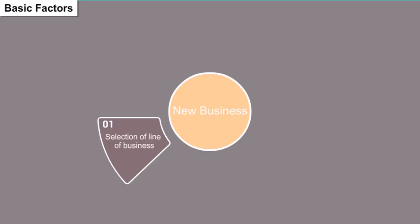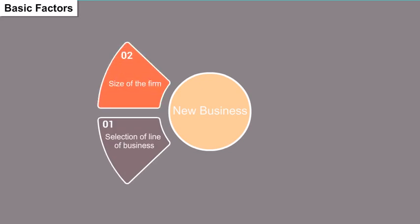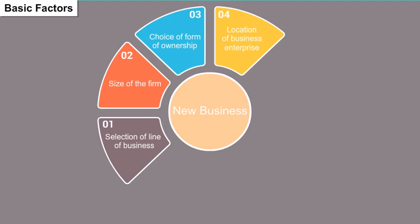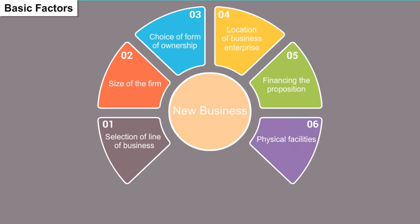The basic factors for starting a business include: selection of line of business, size of the firm, choice of form of ownership, location of business enterprise, financing the proposition, and physical facilities.